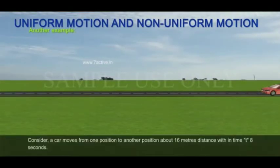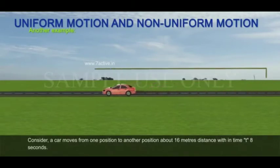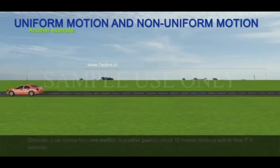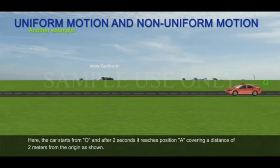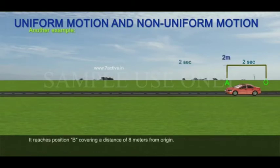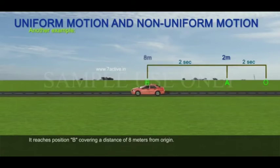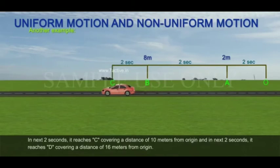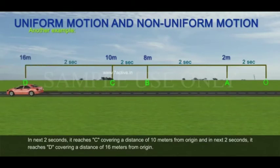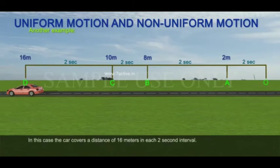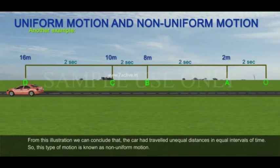Another example: a car moves 16 meters in 8 seconds, but unevenly. It starts from O and after 2 seconds reaches position A covering 2 meters, then position B at 8 meters, then C at 10 meters, and D at 16 meters from origin. The car covers unequal distances in equal intervals of 2 seconds. We conclude that the car travels unequal distances in equal intervals of time — this is called non-uniform motion.